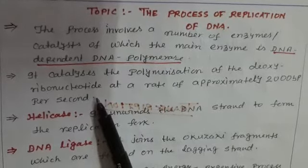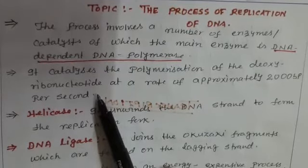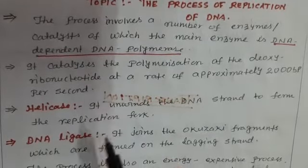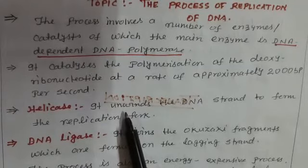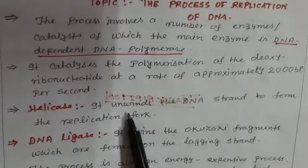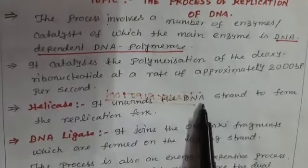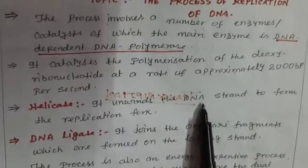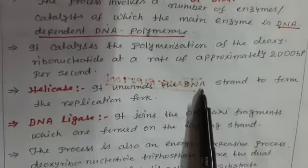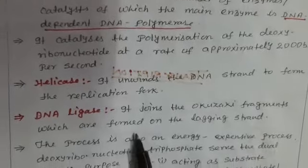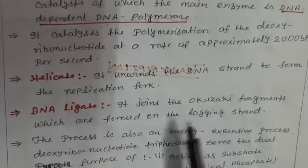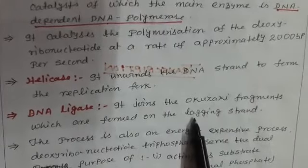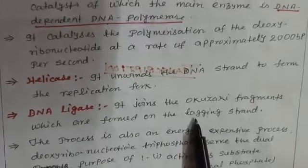Let us understand what enzymes are involved in this process. Helicase is the enzyme which helps in the unwinding of the DNA strands to form the replication fork. The enzyme DNA ligase joins the Okazaki fragments which are found on the lagging strand.